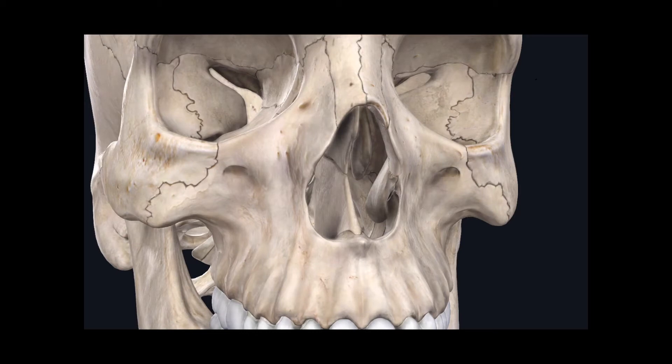Hello everyone, welcome to another anatomy video. It's a great day to study anatomy and today we'll be going over the bones of the visceral cranium. In the last video I defined what the visceral cranium was, as well as the neural cranium and the bones found in each group. If you haven't seen that yet, go back to the last video to get a better definition of those two terms. Today we'll be going over the bones of the visceral cranium and the landmarks found on them.